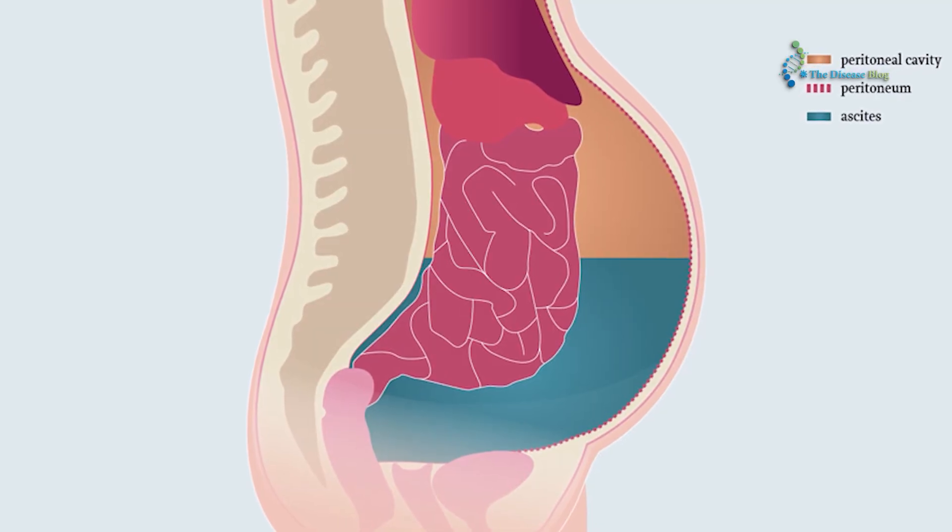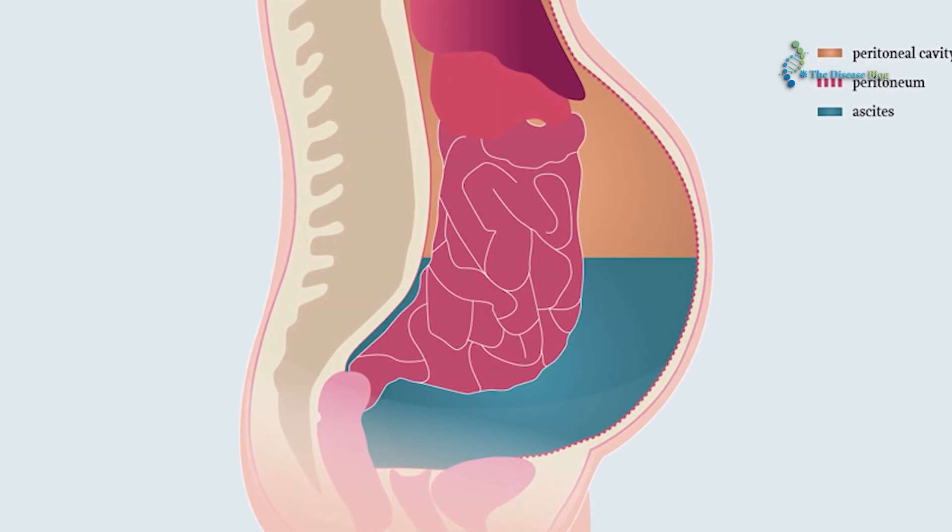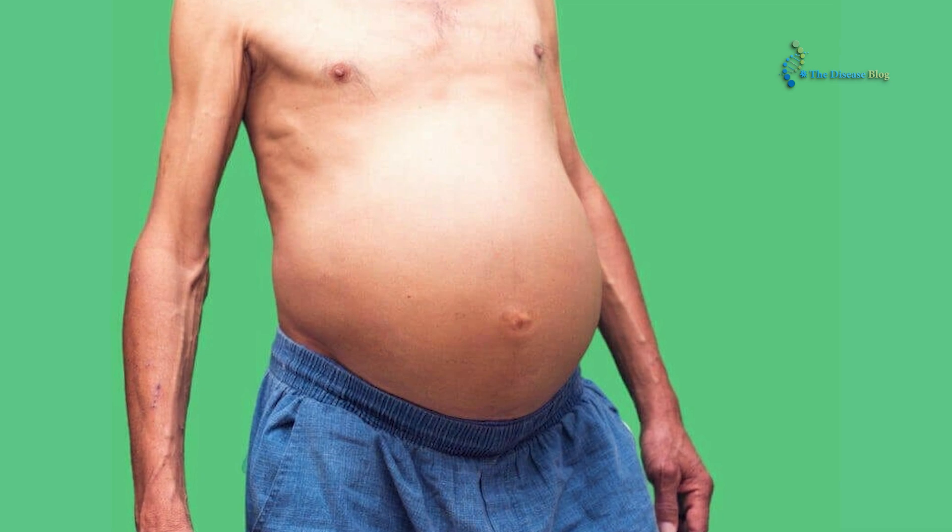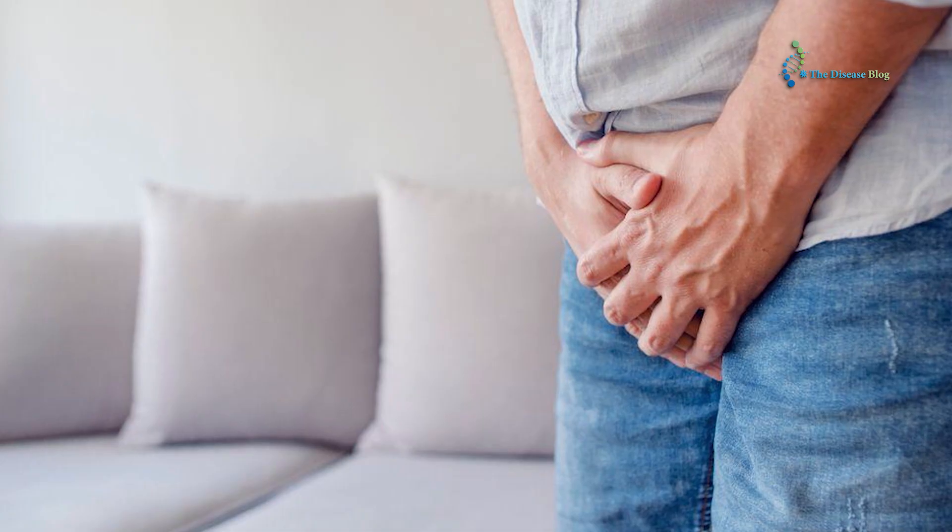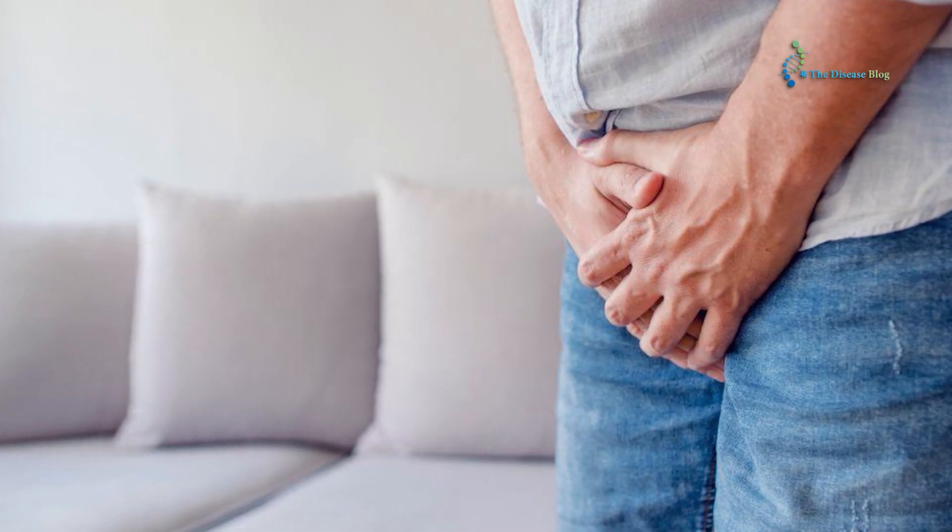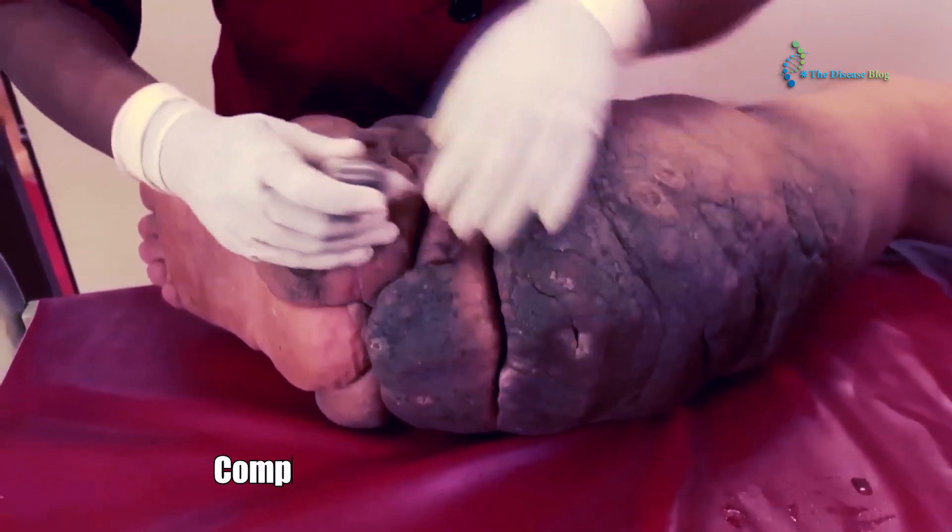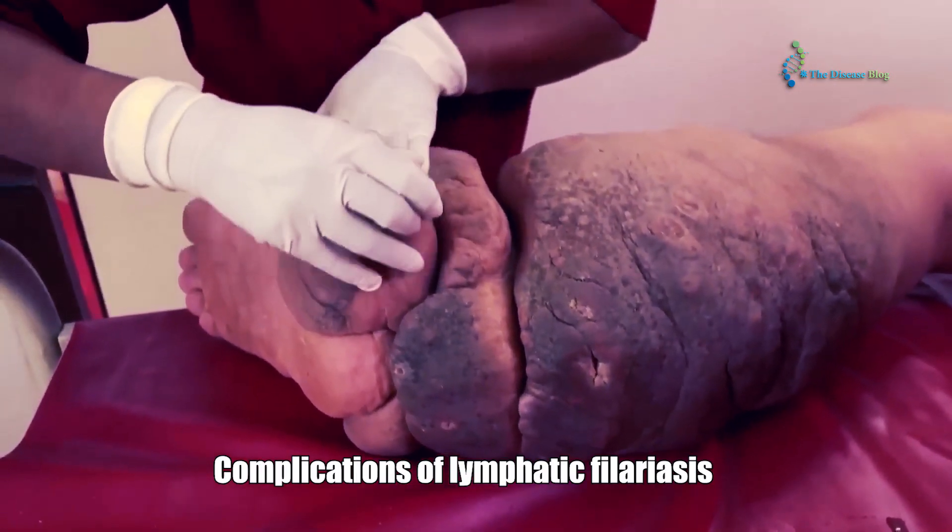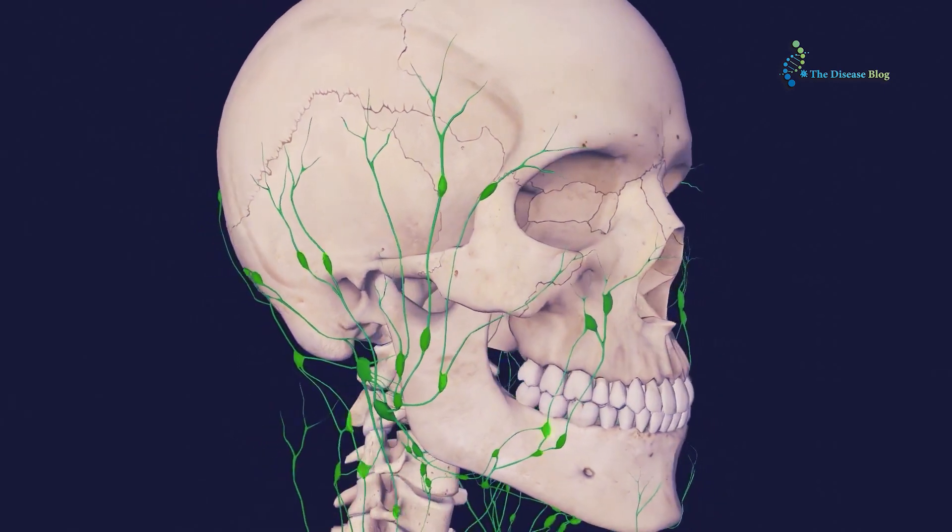This is due to obstruction of lymphatic vessels and buildup of excess lymph in nearby tissues. This swelling and thickening of skin and tissues gives similarity to an elephant. Ascites is also another associated symptom, characterized by fluid buildup in the abdominal cavity.